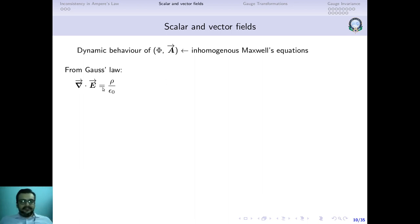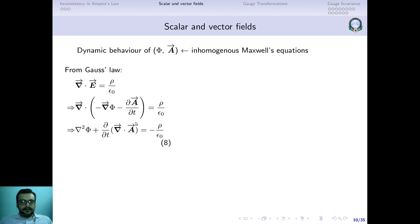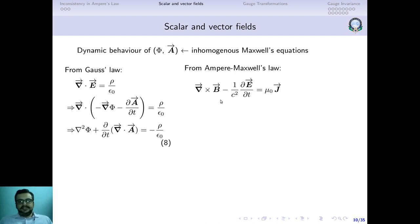From Gauss law — the first inhomogeneous Maxwell's equation — we have divergence of E equals ρ/ε₀. We replace E with its expression: E = −∇φ − ∂A/∂t, so divergence of (−∇φ − ∂A/∂t) equals ρ/ε₀. The divergence of gradient is the Laplacian, and swapping the space and time derivatives on the second term gives: −∇²φ − ∂(divergence of A)/∂t = ρ/ε₀. This is equation number 8.